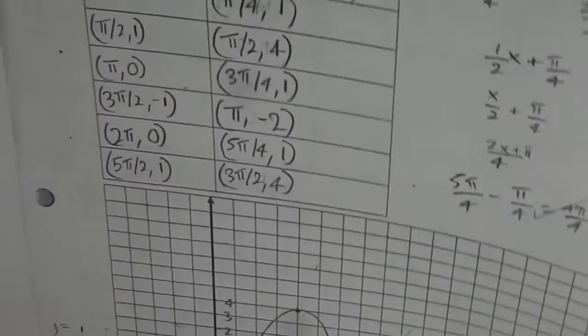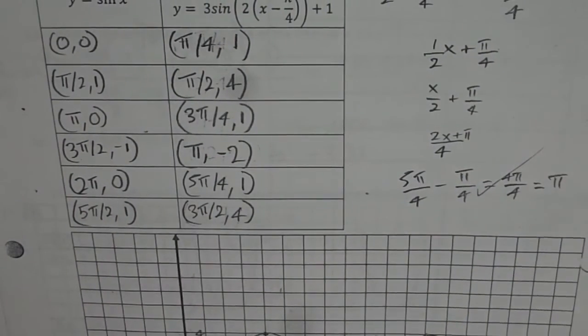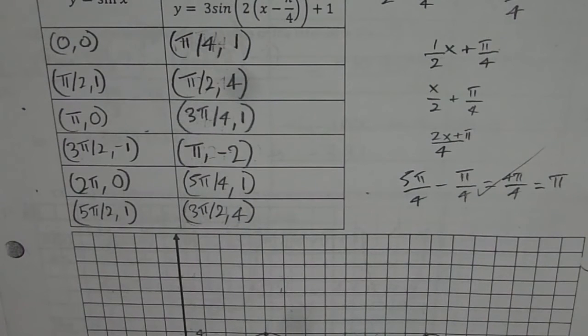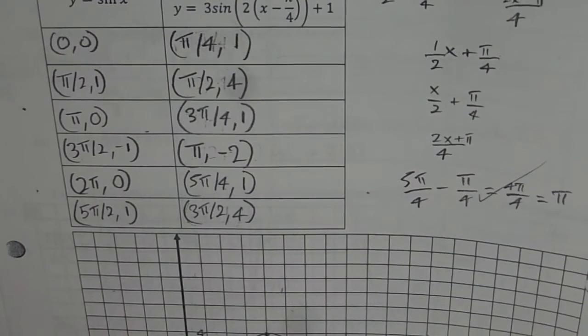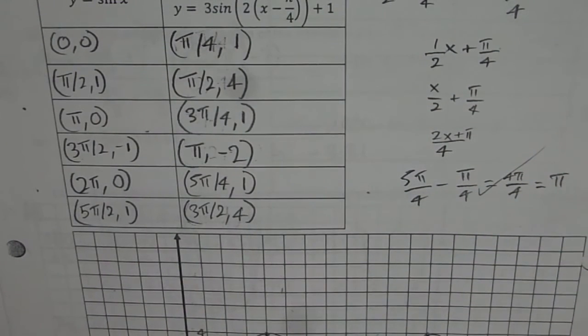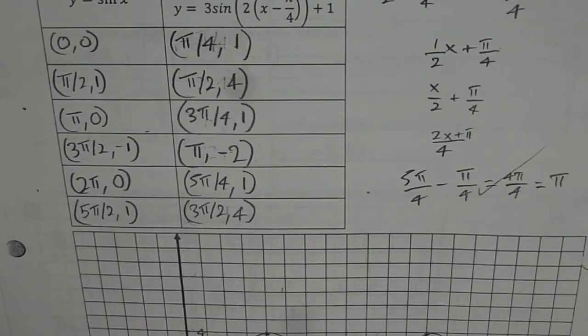So start with the key points. And for sine of x, the key points are (0,0), (π/2,1), (π,0), (3π/2,-1), (2π,0), (5π/2,1), as written by the student. And you do your math and get those transform points.